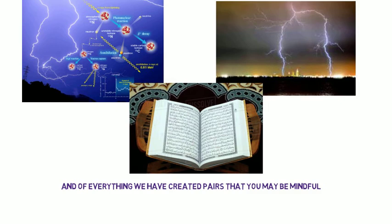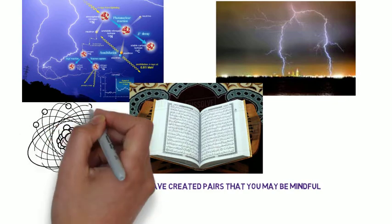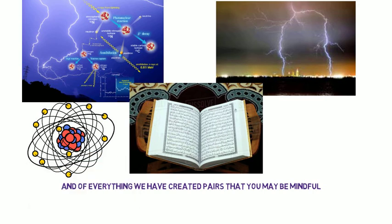This verse indicates that everything is created in pairs, including matters and atoms, which consist of the three basic subatomic components: protons, electrons, and neutrons.